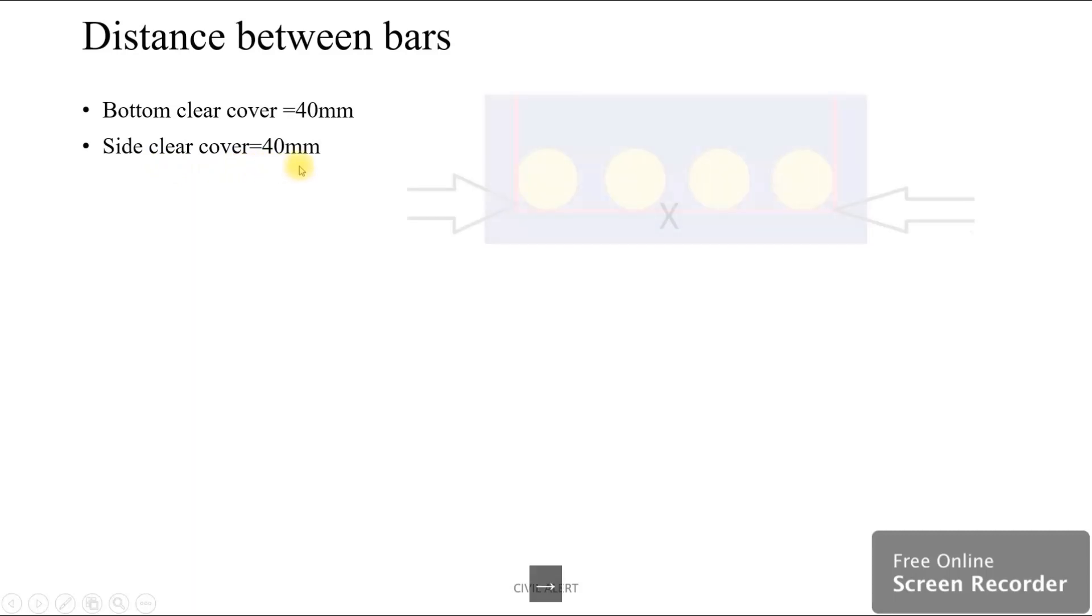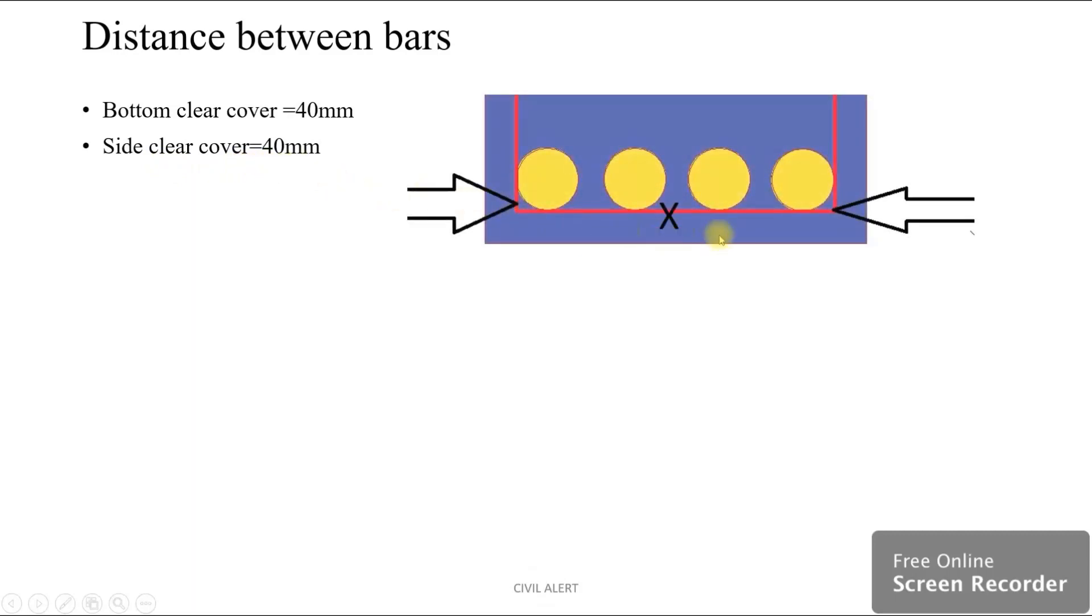The width of the beam is 250 mm, side clear cover is 40 mm. We find the value of X: distance X equals 250 minus 40 minus 40 equals 170 mm. The center-to-center distance between two edge bars is equal to 170 minus 60/2 minus 60/2 equals 154 mm.